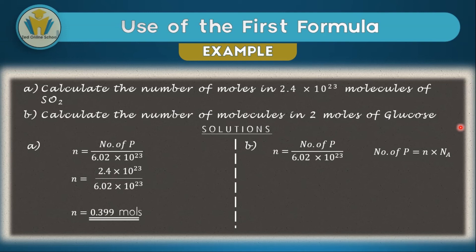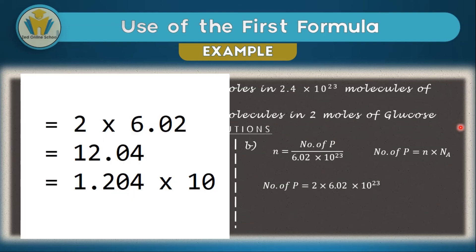Now let's get solving. Number of particles is equal to 2 times 6.02 times 10 to the power 23. This can be found easily by just multiplying the 2 by the 6.02, which gives you 12.04. Now, because we have 12.04, we need to change it into the correct standard form. Instead of going through all that procedure, let's just use the calculator.